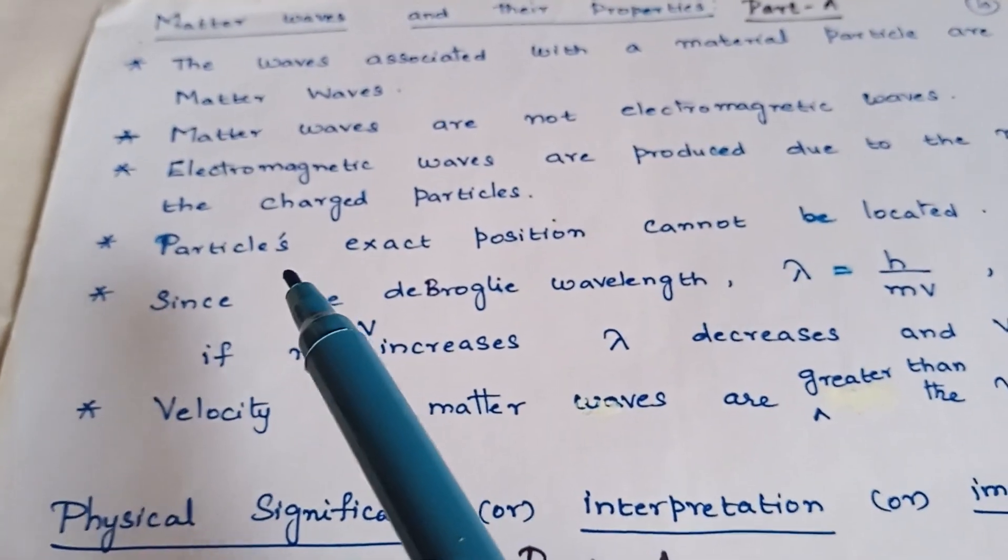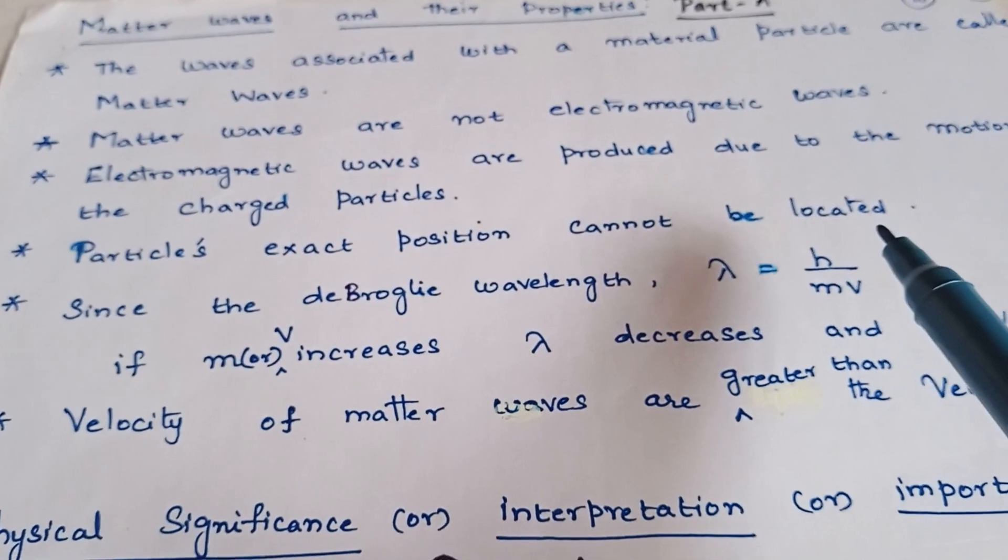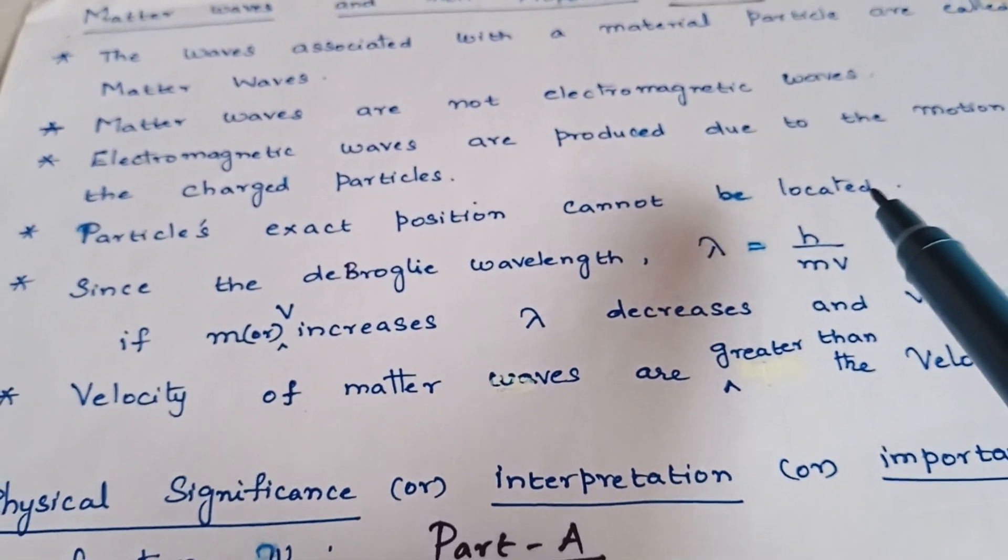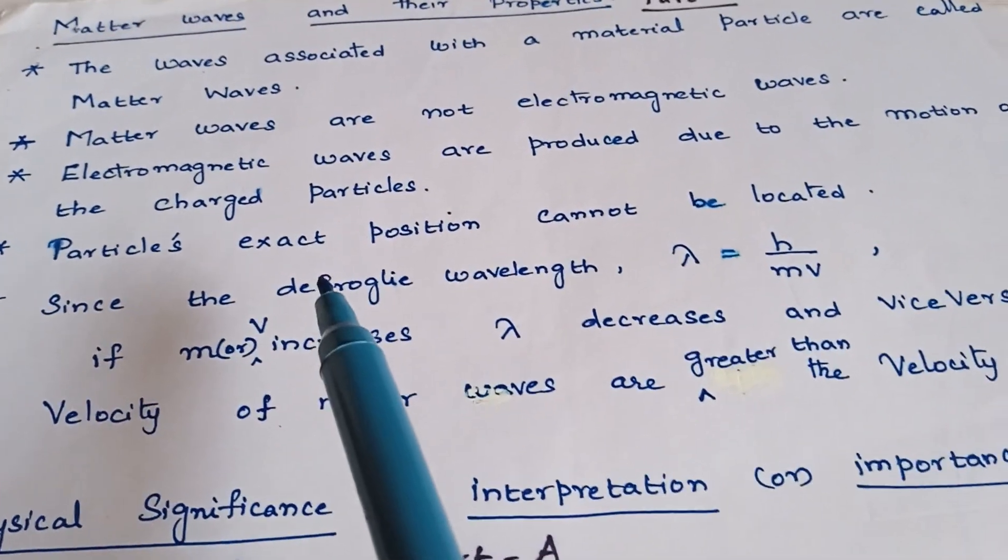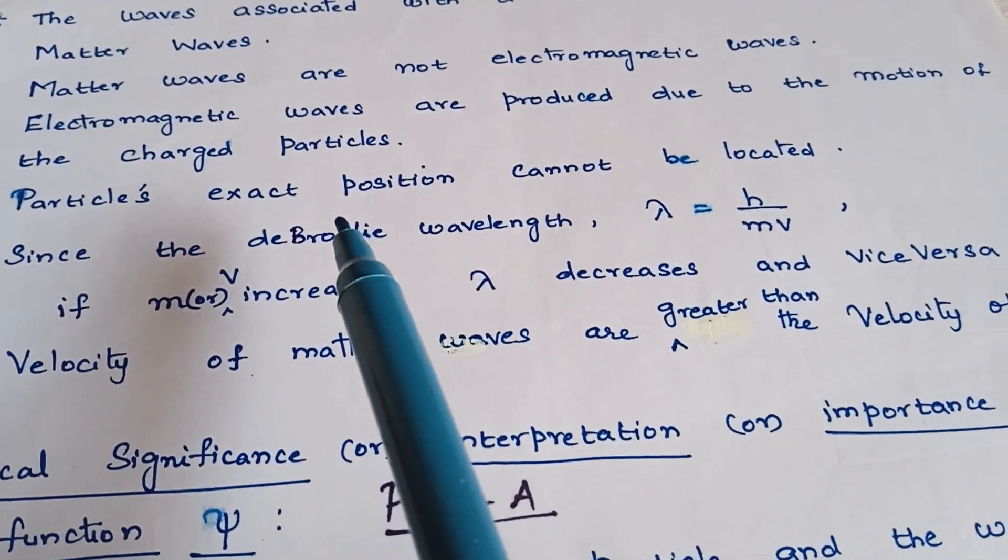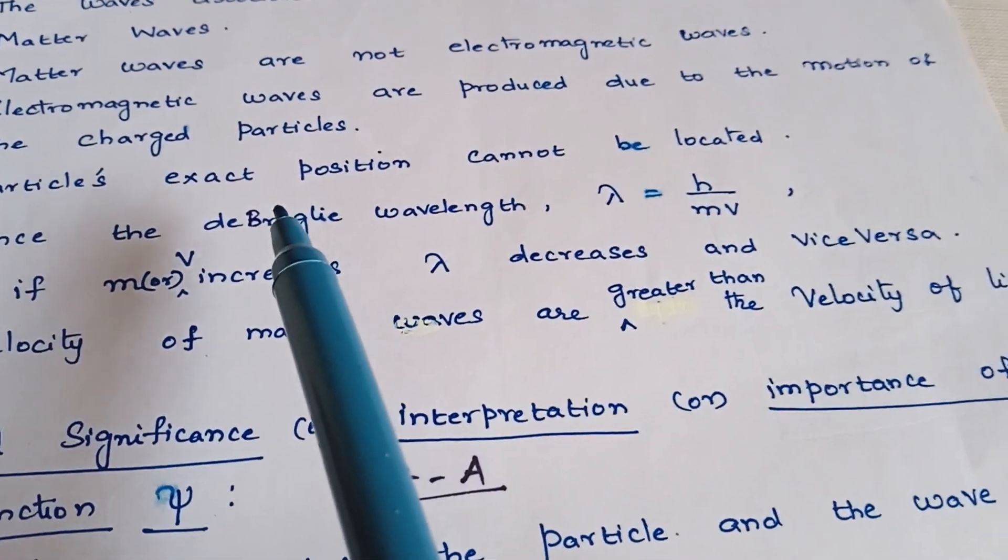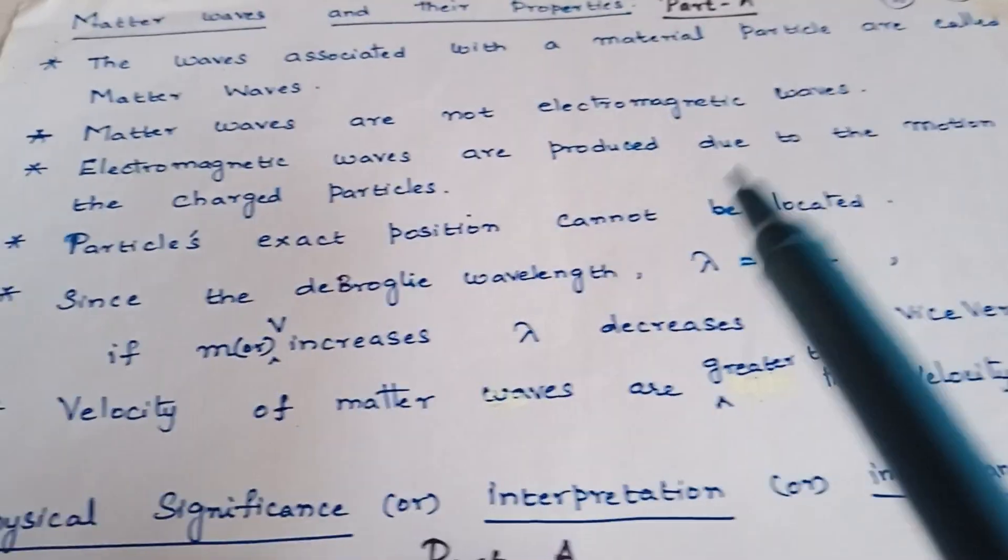Particle's exact position cannot be located while it is moving, whereas the likelihood of the locality of the particle in space-time can be represented by the matter wave.